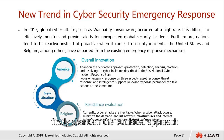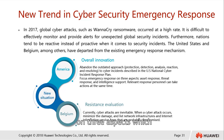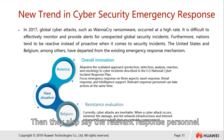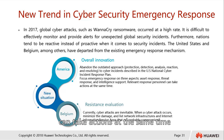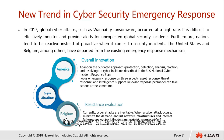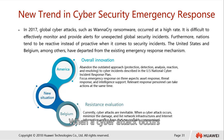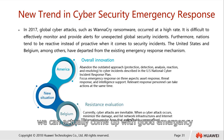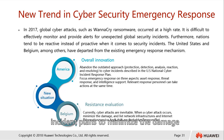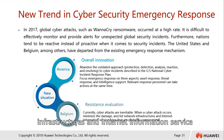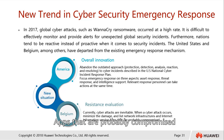The approach taken includes: firstly, abandoning the outdated approach. Then, focusing emergency response on three aspects: asset response, threat response, and intelligence support. Relevant response personnel can take actions simultaneously. For Belgium, it is said that cyber attacks are inevitable, meaning we need to always be alert and aware of potential attacks. When a cyber attack occurs, we can come out with a good emergency incident plan to minimize the damage and list out the network infrastructures and internet information service applications that are probably compromised.